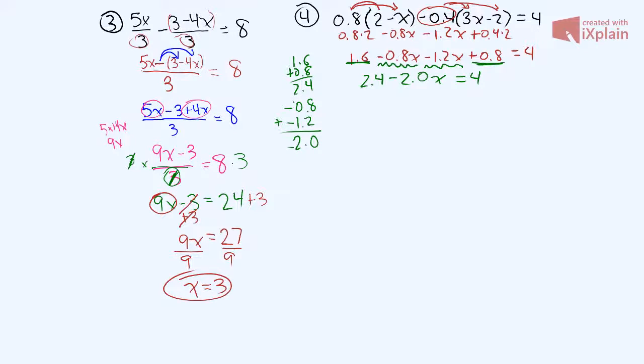Okay, from here we need to isolate our variable term, which is this negative 2.0x. So we need to subtract 2.4 from both sides. And so this is really a 4.0. So we borrow, we get 6, we get 1.6 equals negative 2.0x.